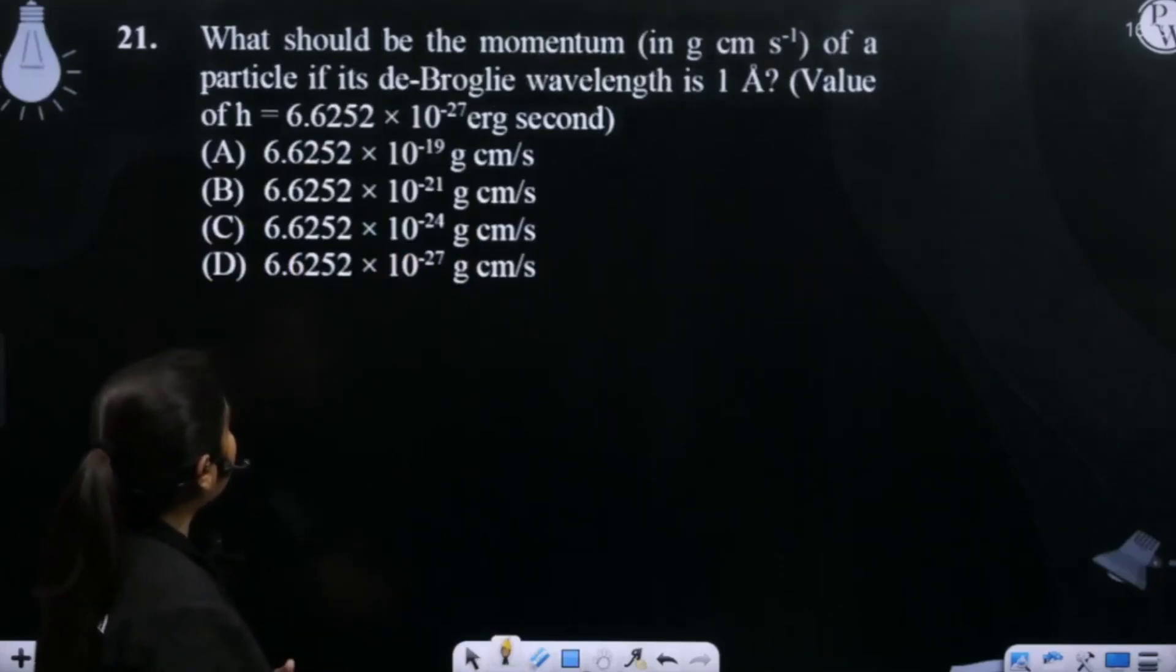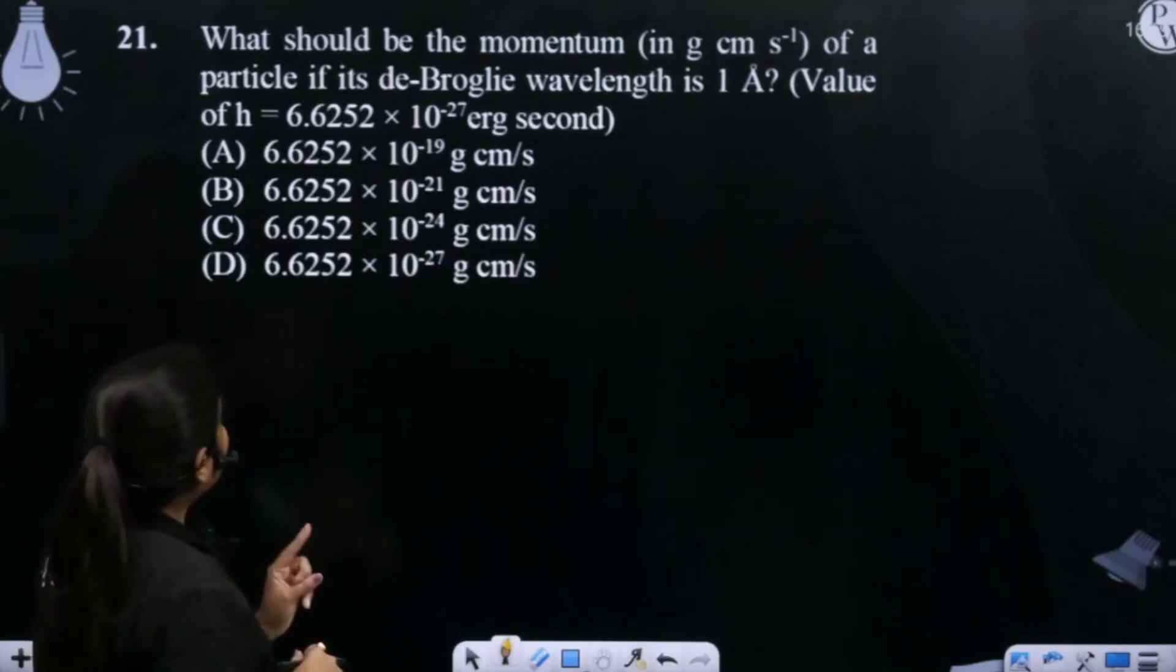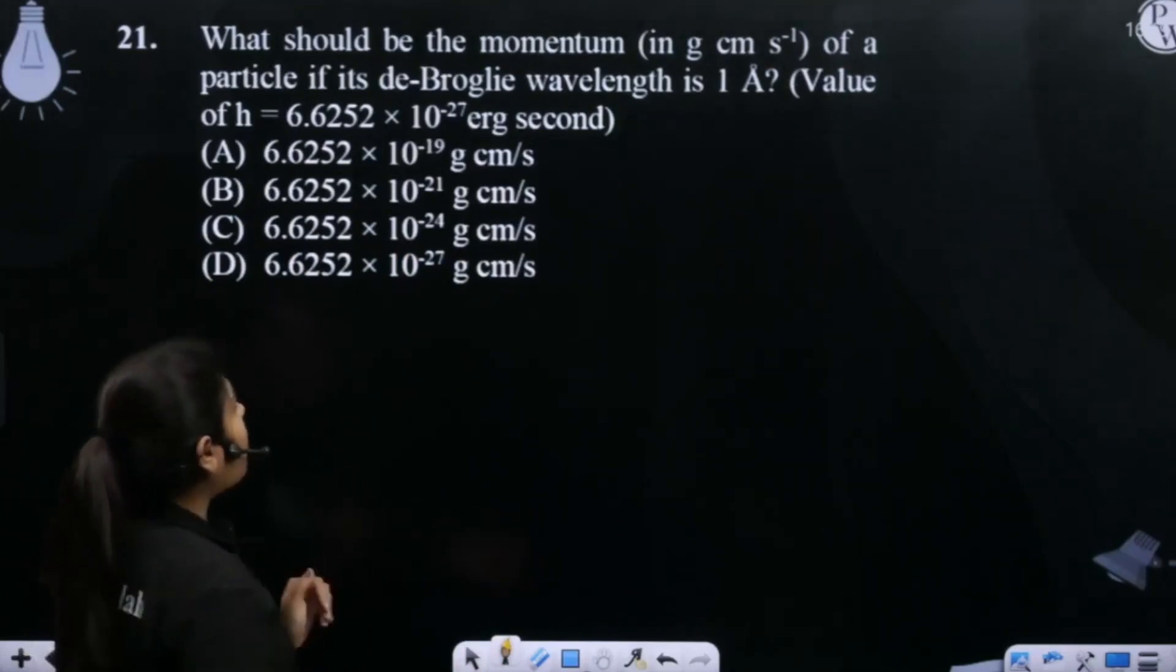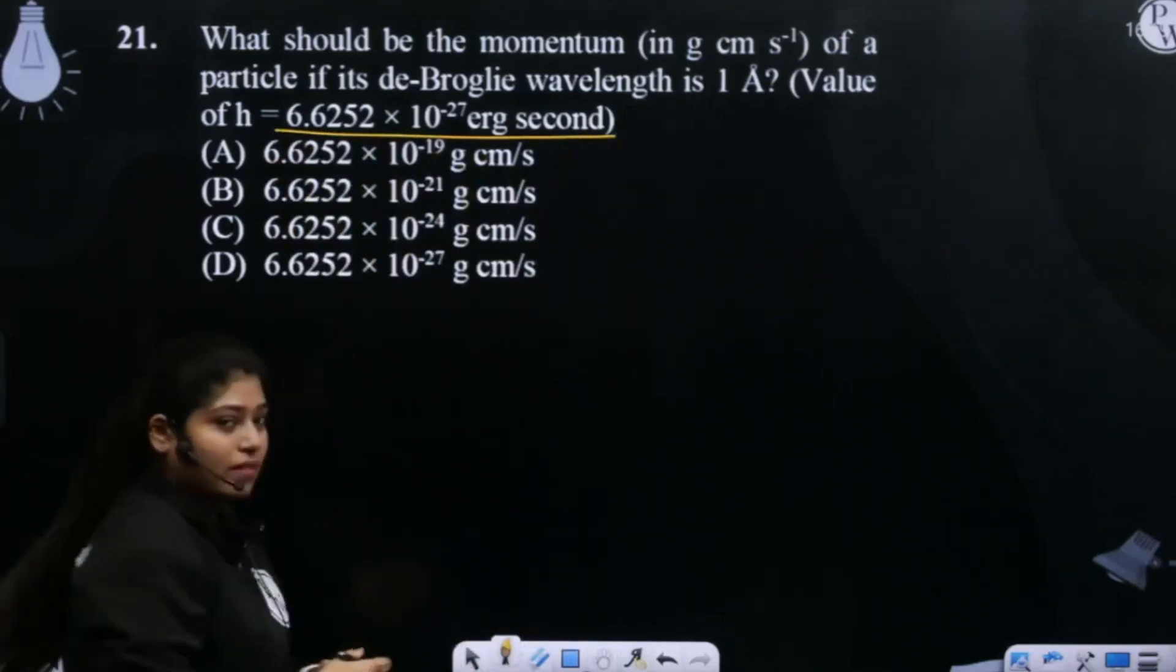What should be the momentum of a particle if its de Broglie wavelength is 1 angstrom? See, now h has provided value provided in erg second. Right?